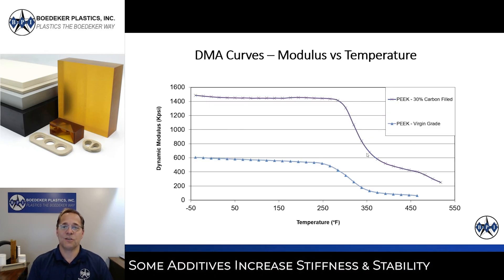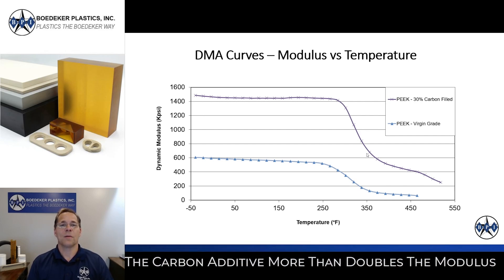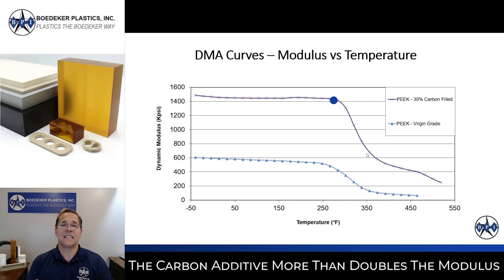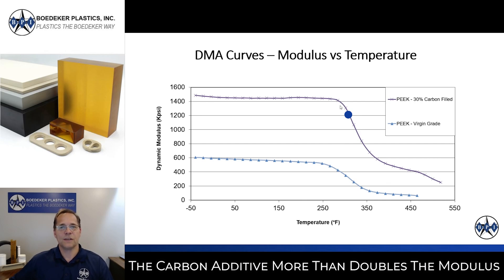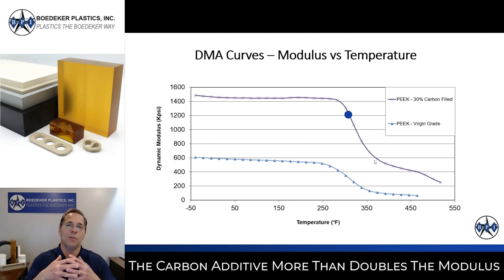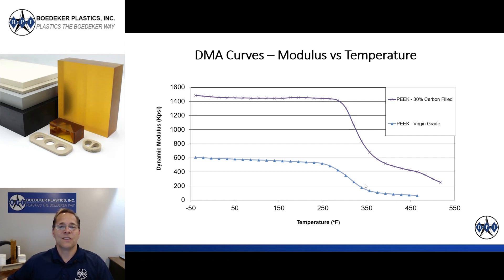Another curve shows the effect of adding fiber reinforcement. Comparing DMA curves for virgin PEEK with no fillers versus a 30% carbon-fiber-filled material, you can see that with the fiber filler holding the polymer together you get much higher stiffness and, in turn, higher strength and more stability with temperature. The base polymer still starts to yield at about the same temperature, but you maintain a higher level of stiffness because the fibers help hold that polymer together.